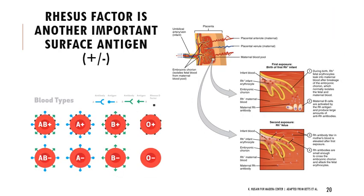Blood typing is also done with rhesus factor, which is another antigen — you either have it or you don't. When referring to blood type, the positive or negative indicates rhesus factor: positive means having it, negative means not having it. Rhesus factor complicates things during pregnancy depending on mismatches between maternal and fetal blood.